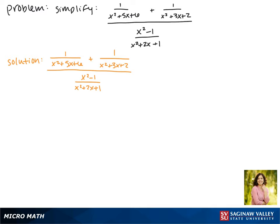Our first step is to factor these trinomials and we'll start with the 1 in the first term of the numerator. The factors of 6 that add to make 5 are positive 3 and positive 2. Then the factors of 2 that add to make 3 are positive 2 and positive 1.